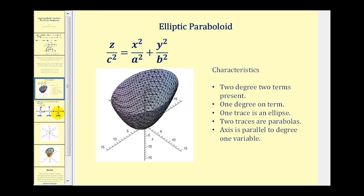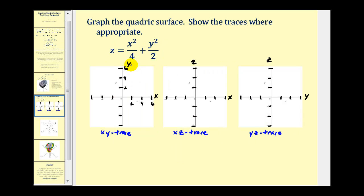Let's go and take a look at an example. First, we need to recognize that this does fit the form of an elliptical paraboloid. And now we'll go ahead and find the three traces for this given equation.